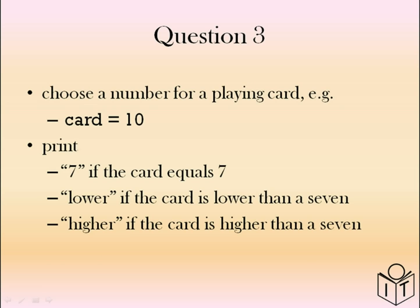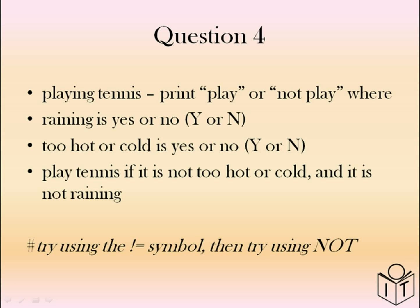Question three: you have a playing card, for example card equals 10. In the if statement, if the card equals seven, print the character '7'. If it's lower than seven, print 'lower'. And if it's higher, print 'higher'. Question four: decide whether to play tennis — print 'play' or 'not play' based on whether it's raining (yes or no) or if it's too hot or cold (yes or no). If it's not too hot or cold and it's not raining, we play; otherwise, we don't play.